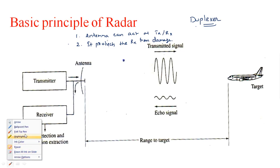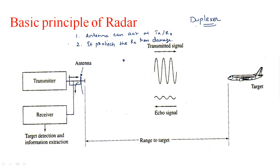Consider a duplexer with three active ports — the fourth port is permanently terminated. Port one is connected to the transmitter, port two to the antenna, and port three to the receiver. During transmission, the input signal enters at port one and goes directly to port two, the succeeding port, where it is radiated into free space.